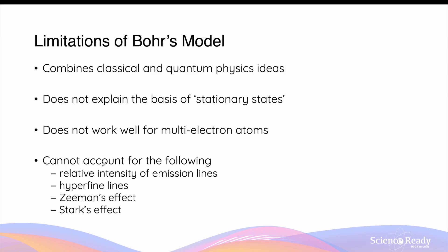There are numerous other limitations. Bohr's model cannot account for the relative intensity of emission lines — that is, why some emission lines in the hydrogen atom were brighter than others. He could not account for the presence of hyperfine lines — that is, why when a single emission line is magnified, we can see the presence of multiple thinner and more fine lines making up a single emission line. Bohr's model also cannot account for Zeeman's and Stark's effect, which is the effect of magnetic and electric fields on the splitting of emission lines respectively.